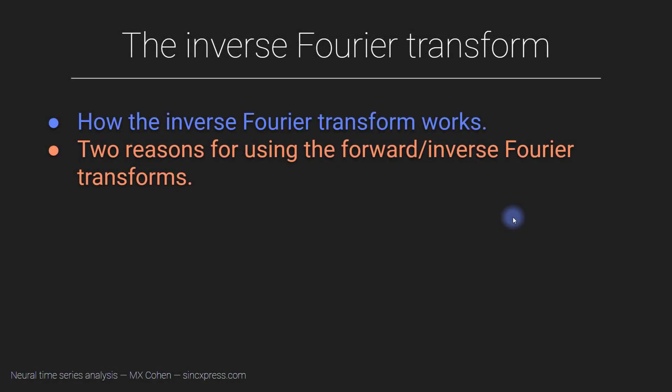In the previous video I discussed why the Fourier transform is a perfect representation in the frequency domain of your time domain signal. One of the implications of that lossless transformation is that we can also use a similar operation to get back from the frequency domain into the time domain. That operation is called the inverse Fourier transform.